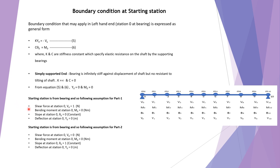The calculation is done in two parts. For Part 1, the initial conditions at station 0 are: shear force V0 = 1 N, bending moment M0 = 0 N·m, slope θ0 = 0, and deflection Y0 = 0 m. For Part 2, the initial conditions at station 0 are: shear force V0 = 0, bending moment M0 = 0, slope θ0 = 1, and deflection Y0 = 0 m. With these initial conditions, shear force, bending moment, slope, and deflection are calculated at all other stations.